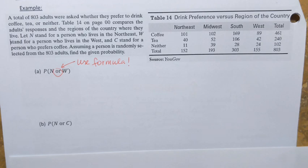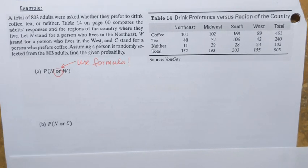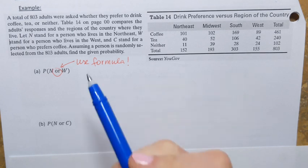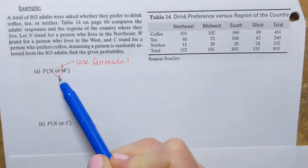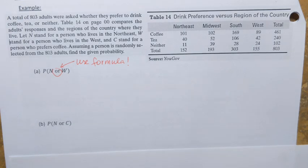There are two formulas for the addition rule: the addition rule for independent events, and the general addition rule. For these questions, we're going to apply the general addition rule, because it's safe to use for any example where you have OR — the general addition rule applies to all kinds of events, whether they are mutually disjoint or not.